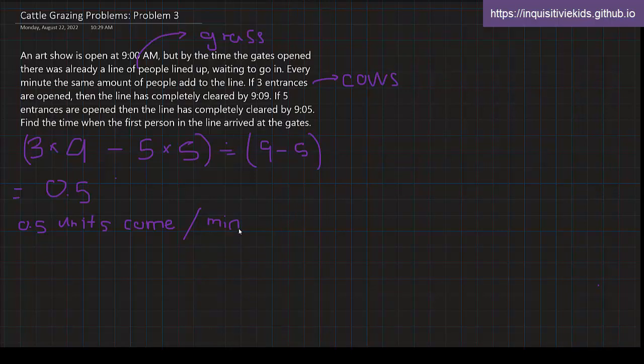Now we try to find the original number of people. The first way, that would be 3 times 9 minus 0.5 times 9, and we have 22.5. So 22.5 units of people is the original amount when 9 AM started. Even before the gates opened, there were already people waiting there. That amount is 22.5 units of people.